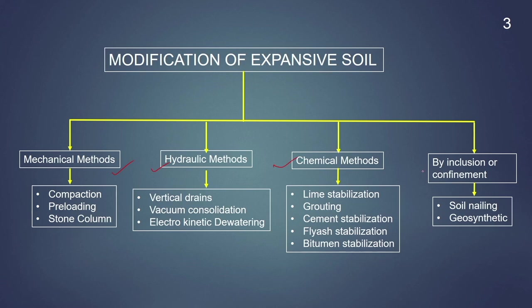In today's class, we will learn about the methods which include inclusion or confinement, by which we can achieve ground improvement of expansive soil. This method can involve soil nailing, geosynthetics, and ground freezing. I will be discussing all three of these topics in today's class.